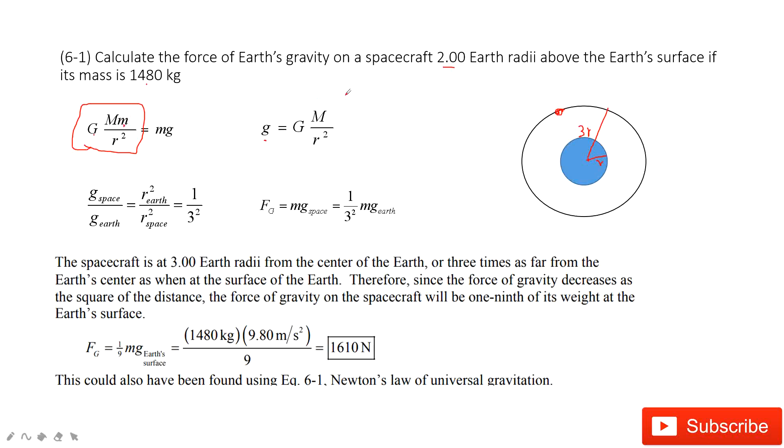So we need to consider the object on the surface of the Earth. Then you know this g is a constant, 9.8 meters per second squared, and then you use this g to get the gravitational force. Thank you.